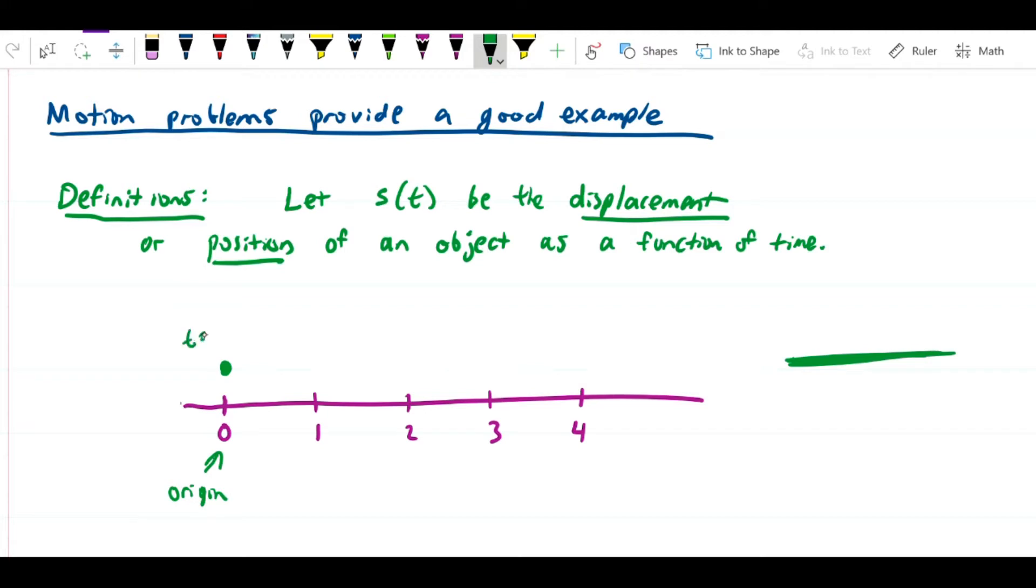The displacement measures the distance of the object from the origin. Let's suppose that at time t equals zero the object starts at the origin. It could start four meters from the origin, but just for simplicity let's say it starts at t equals zero.